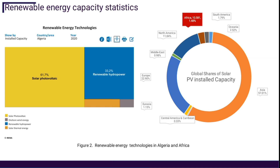The most used renewable energy technology is solar energy — specifically solar photovoltaic — at 61.7 percent. The global share of solar PV installed capacity is also dominated by the Asian continent, as mentioned before.